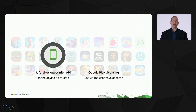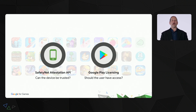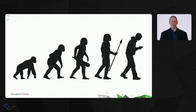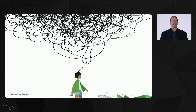In the past, separate APIs helped with specific problems. The Safety Net Attestation API and Google Play licensing help thousands of games trust devices, their installed app binaries, and user access privileges every day. But the challenge continues to evolve. There are increasingly sophisticated forms of abuse that put your users and your business at risk. You've also told us that you're concerned about the complexity of integrating with multiple APIs and the fear of letting serious abuse through without even knowing.